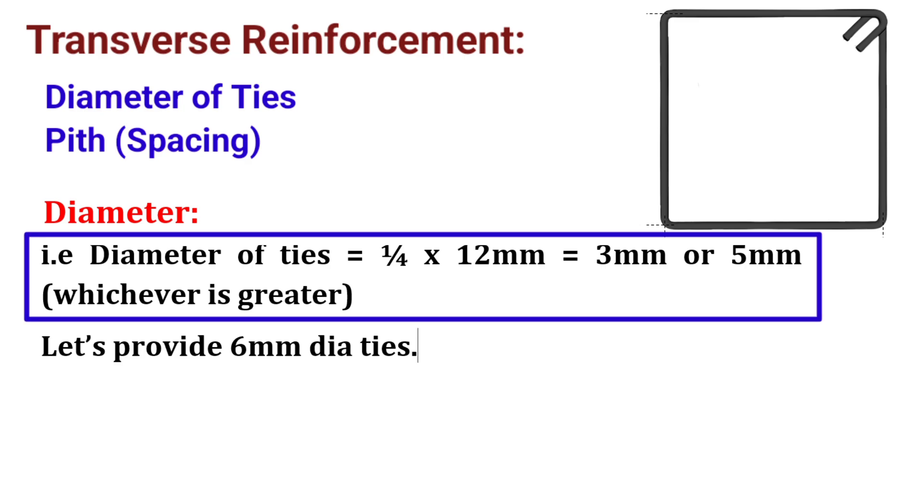That is, diameter of ties will be equal to 1 by 4 into 12, which will be equal to 3 mm or we can take 5 mm, whichever is greater. Let us provide 6 mm dia bars.